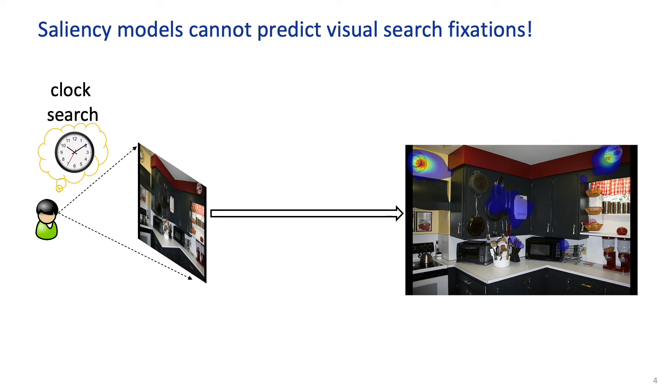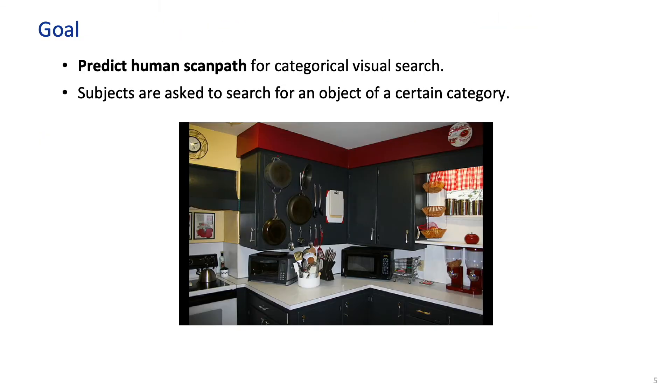Similarly, if the target is a clock, we can see that saliency models cannot predict human fixation during visual search. So in our work, our goal is to predict human scan paths for categorical visual search, in which subjects are asked to search for an object of a certain category, for example, microwave and clock.